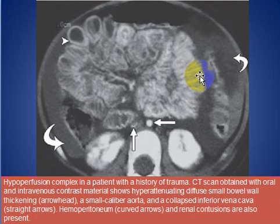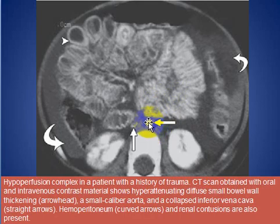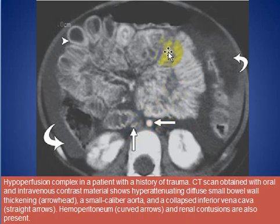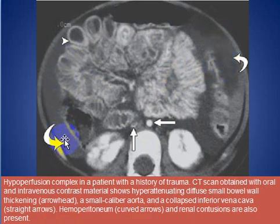Here we see hypoperfusion complex in a patient with a history of trauma. We see the aorta is markedly attenuated, the IVC is also attenuated, and there is hyperenhancement of the bowel wall associated with ascites.